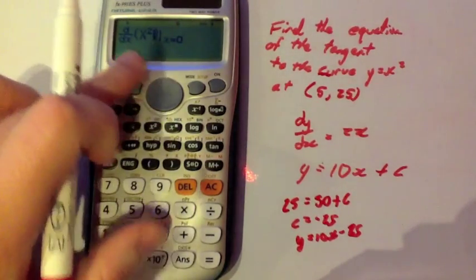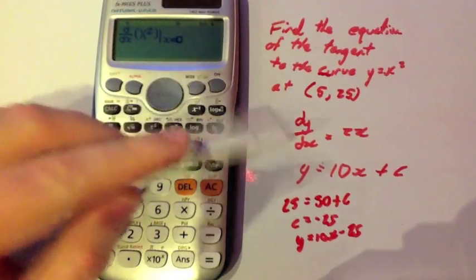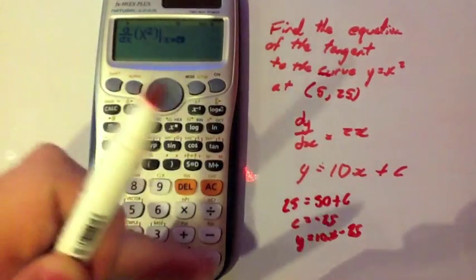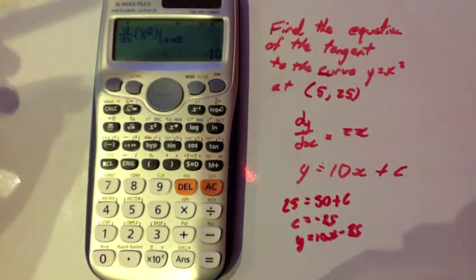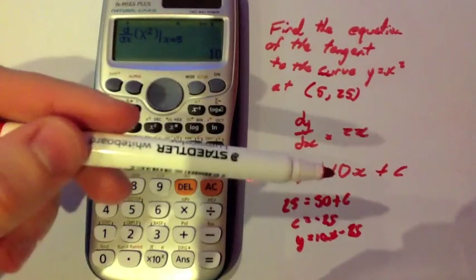We've typed in the function we need to differentiate, and it says x equals, and now we want to put in 5. If we put 5 in there and press equals, it will differentiate it and put 5 in, and it's told us that the gradient of the curve at that particular point is equal to 10.